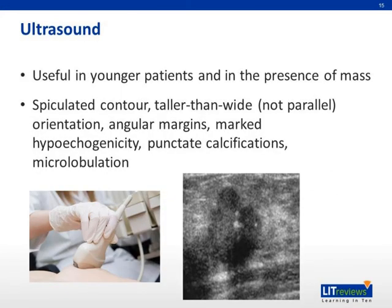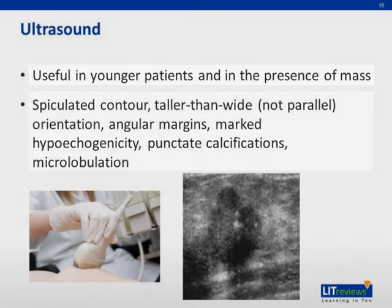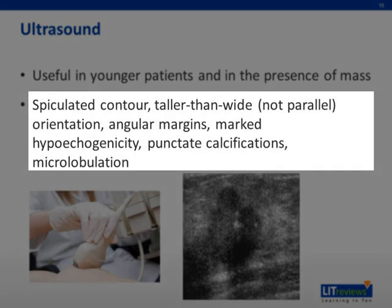Ultrasound is another commonly used imaging modality. It is very helpful in patients under the age of 40 whose dense breast parenchyma impedes the penetration of x-rays. It is particularly useful in the evaluation of masses, where it can distinguish between cystic and solid lesions. Like mammograms, it is useful for lesions five millimeters or more in size. Suspicious sonographic features include spiculated contours, taller-than-wide orientation, angular margins, hypoechogenicity, microlobulations, and punctate calcifications. Presence of such lesions may require cytological or histological evaluation.